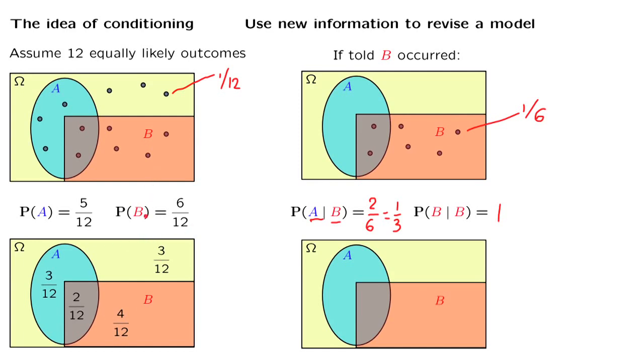How should we revise our probabilities and create, construct conditional probabilities, once we are told that event B has occurred? First, this relation should remain true. Once we are told that B has occurred, then B is certain to occur. So it should have conditional probability equal to 1. How about the conditional probability of A given that B has occurred? Well, we can reason as follows.